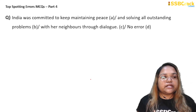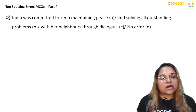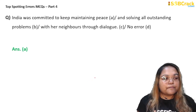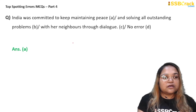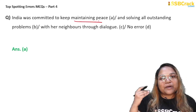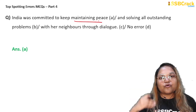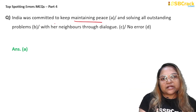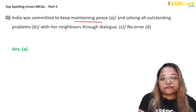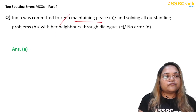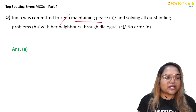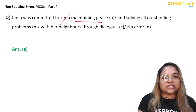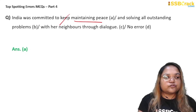Next question: 'India was committed to keep maintaining peace and solving all outstanding problems with her neighbors through dialogue.' The error is in part A — the word 'keep' is superfluous. Since 'maintaining' already conveys the meaning of continuing to do something, using 'keep' before it is redundant and unnecessary. It should simply be 'committed to maintaining peace and solving all outstanding problems.' Answer: option A.